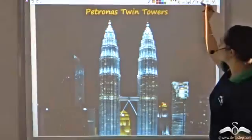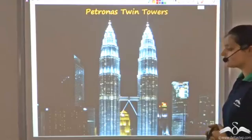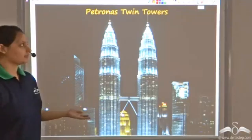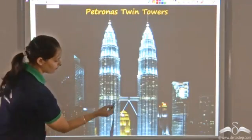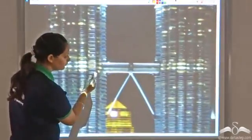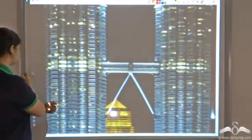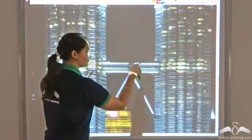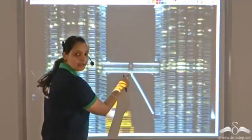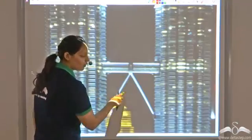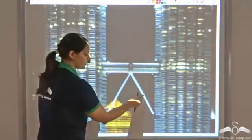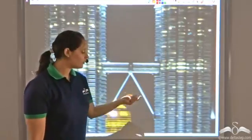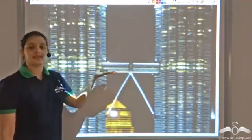Now let's look at the Petronas Twin Towers, which were once the tallest buildings in the world. If we zoom into the image, we can see a sky bridge connecting the two towers. This sky bridge is connected by a support beam supported at the center, so the two beams form right triangles. Each beam in these right triangles is actually the hypotenuse. We can apply the Pythagorean theorem to find the length of the beam needed to support this bridge.